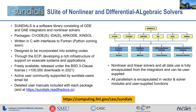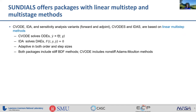The structure of Sundials looks like this: we have six packages, and they interface to generic sets of interfaces for data structures, matrices, and solvers as needed. The key thing here is that nonlinear and linear solvers and all data are encapsulated from the integrators, and all parallelism is encapsulated in the vector and solver modules, giving us a lot more flexibility.